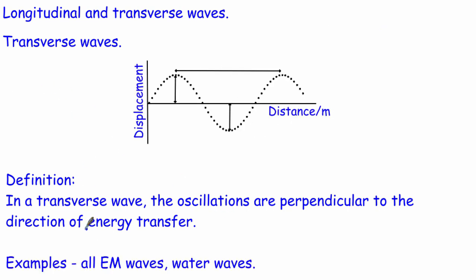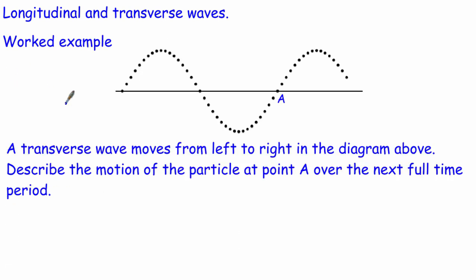Examples of transverse waves include all electromagnetic waves — all seven: radio waves, microwaves, infrared, visible light, ultraviolet, X-rays, and gamma rays. Other examples include water waves and waves on a rope. If you're asked for a transverse wave that is not an electromagnetic wave, always write down water waves or waves on a rope. If just asked for any transverse wave, any one of the electromagnetic waves will do.